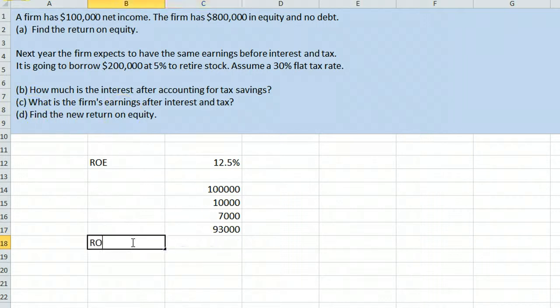And it's now asking for the new return on equity. The new return on equity is the net income, $93,000, divided by the equity, which is now $600,000 because we've retired $200,000 worth of stock. That gives 0.155 or 15.5%. And what you can see here is that by borrowing, we have increased the return on equity from 12.5% to 15.5%.